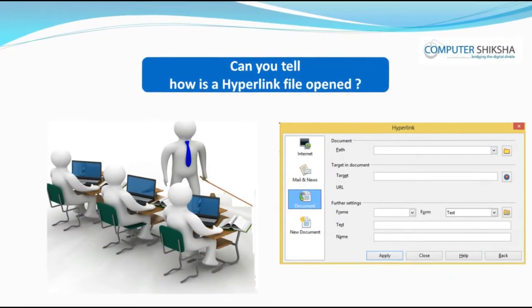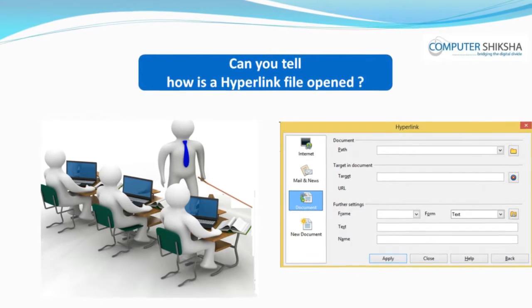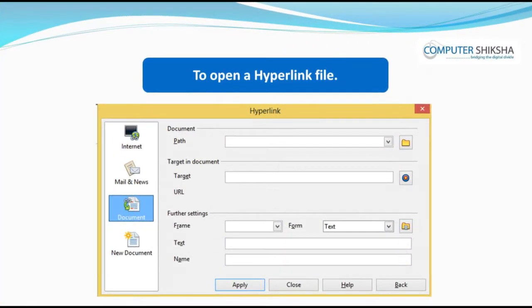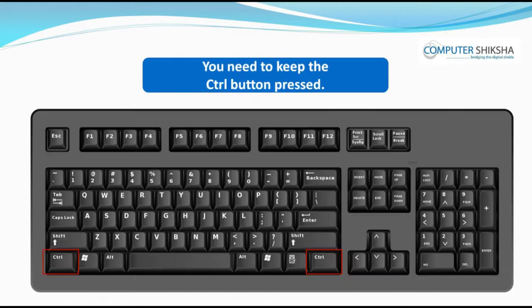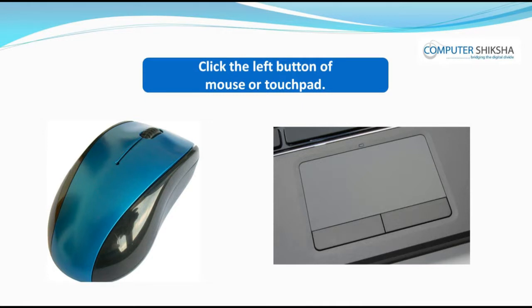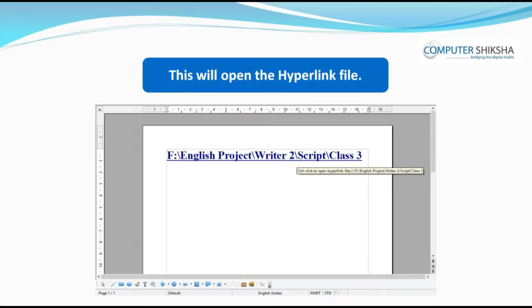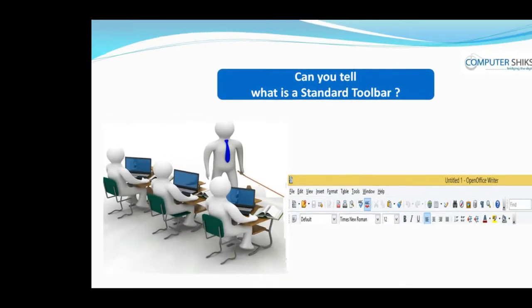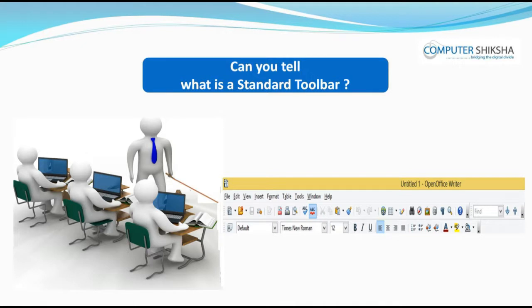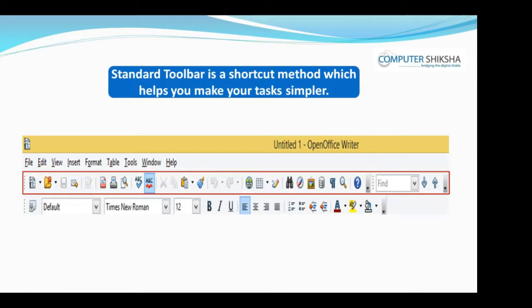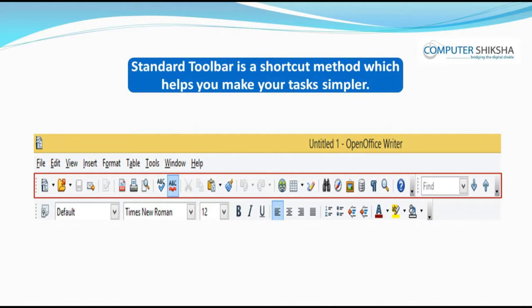Can you tell how a hyperlink file is opened? To open a hyperlink file, you need to keep the control button pressed with the finger of your left hand, and with the right hand, left click the mouse or touchpad for 2 seconds. This will open the hyperlink file. Standard toolbar is a shortcut method which helps you make your tasks simpler.